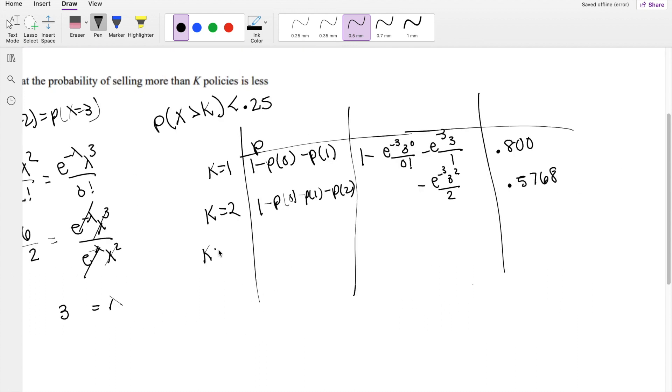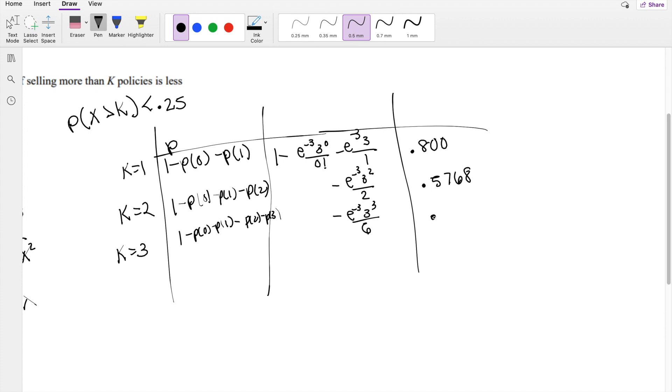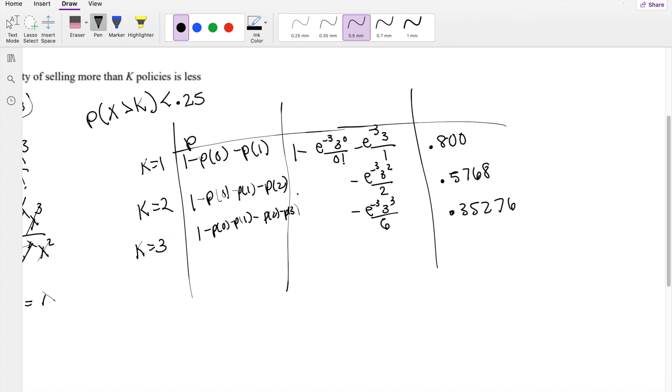What about k equals 3? That's everything else: 0 minus 1 minus 2 minus 3. From the previous one, I subtract e to the negative 3, 3 cubed over 3 factorial, which is 6. This equals 0.35276. Getting close!